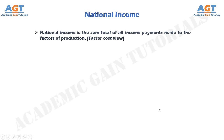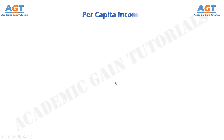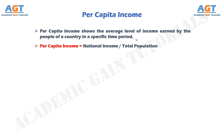National income is the sum total of all income payments made to the factors of production. The components of national income include: rents, compensations to employees, wages, interest, and profits. Per-capita income shows the average level of income earned by the people of a country in a specific time period. Per-capita income is a ratio of the national income and the total population of a country.